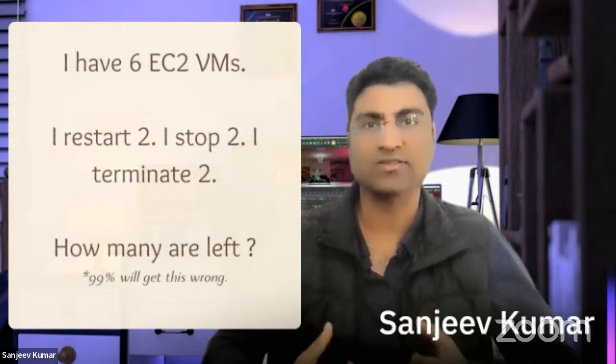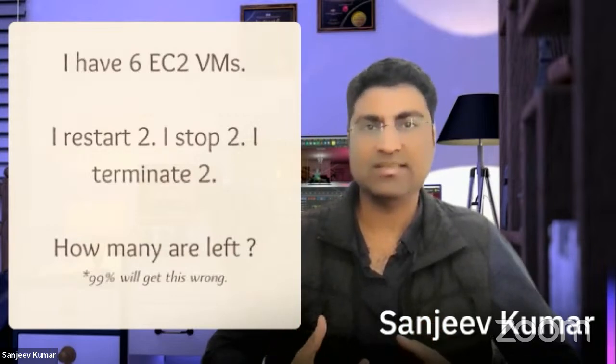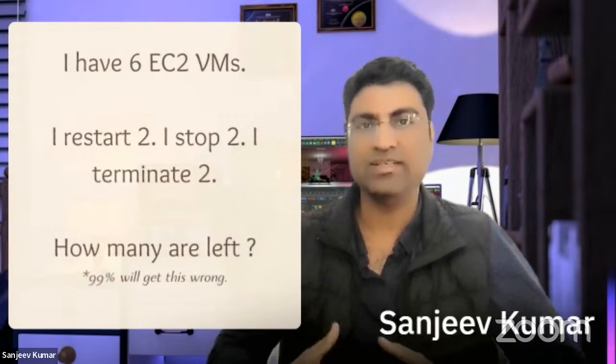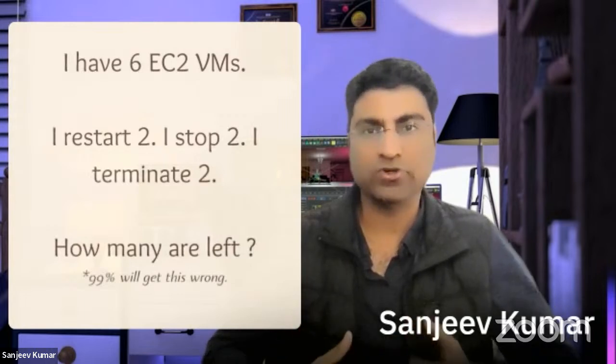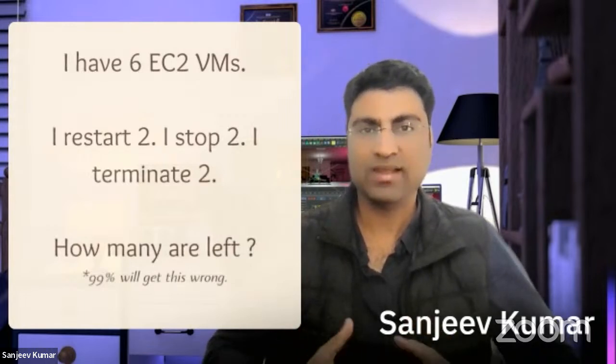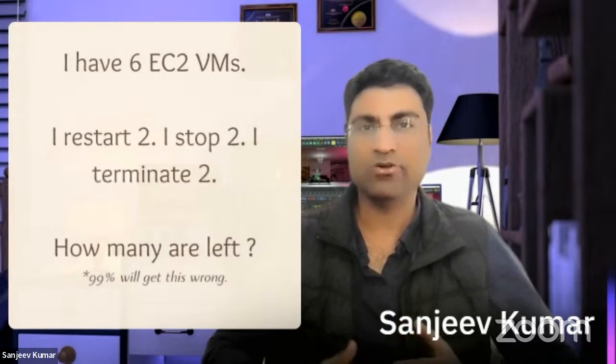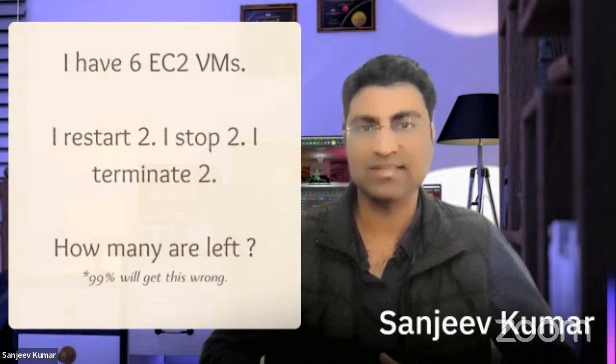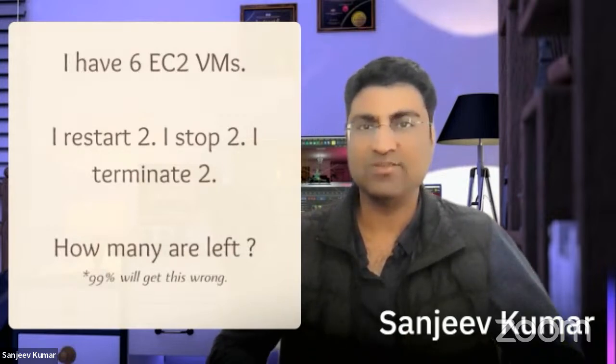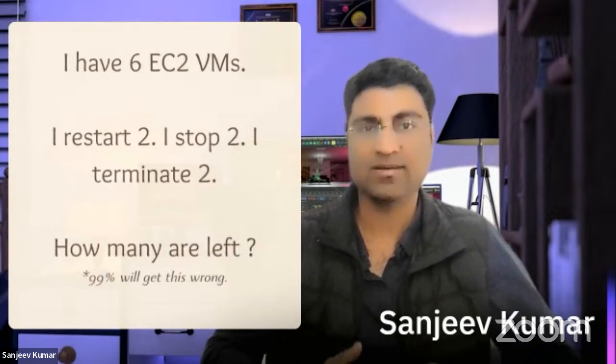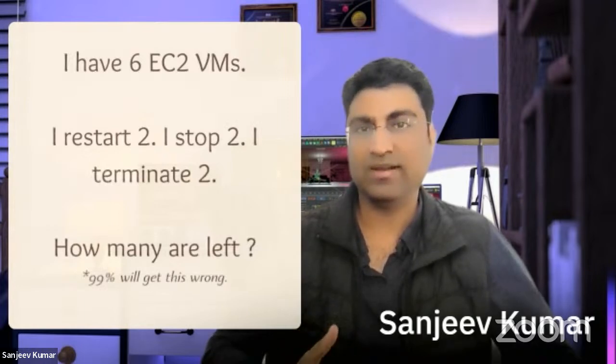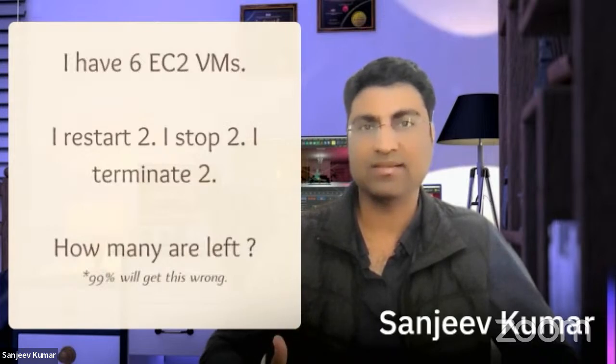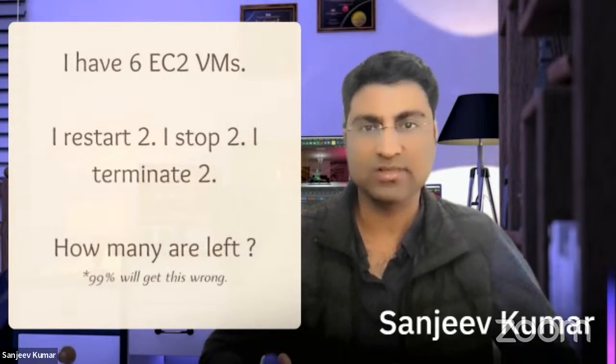If the instances are part of an auto scaling group, you restart two, you stop two, or you terminate two, it will automatically take you to a desired state of EC2 instances. If your desired state was six instances, terminating instances will not have much impact. They will go down, auto scaling group will detect that the instances are down and the desired instances are six, and it will recreate those instances.